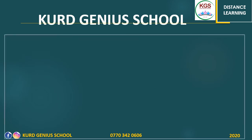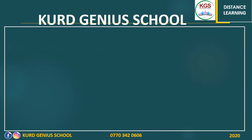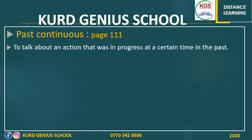Now we have a new subject: past continuous, page 111. Why do we use past continuous? We use it when we want to talk about an action that was in the past and was in progress at a certain time — something that happened in the past and was continuing without stopping. We can use past continuous in three different forms: affirmative, negative, or question.